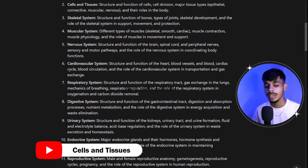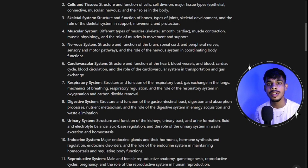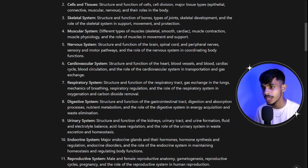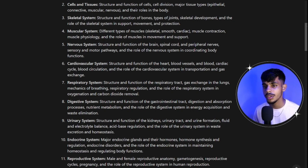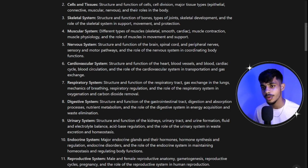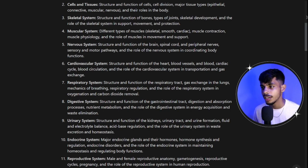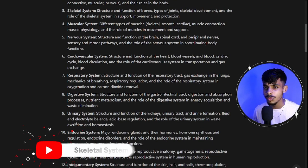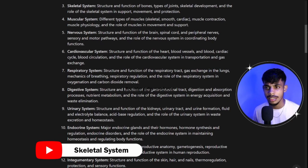Next is cells and tissues, where you will understand the structure and function of the cell, cell division, and the major types of tissues — epithelial tissue, connective tissue, and muscular tissue. Once that is done, we move to the skeletal system, understanding bones, different bone structures, joints, and the importance of the skeletal system in movement and protection.